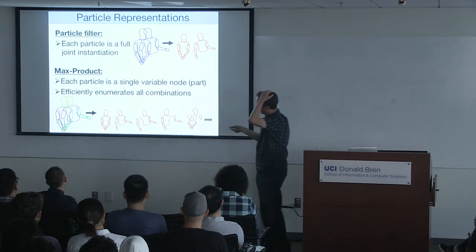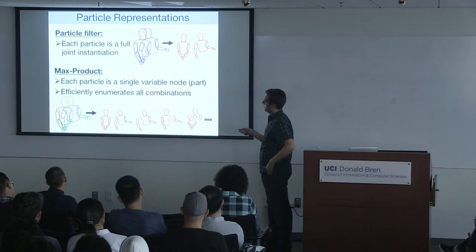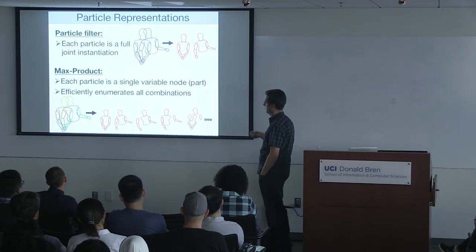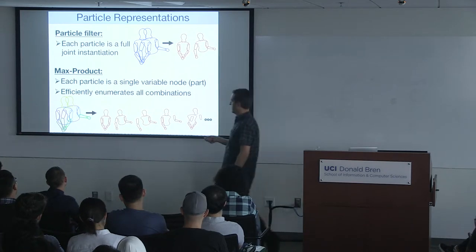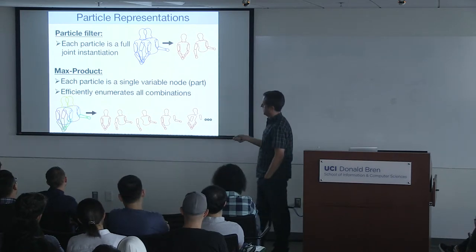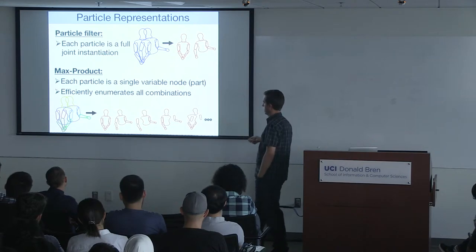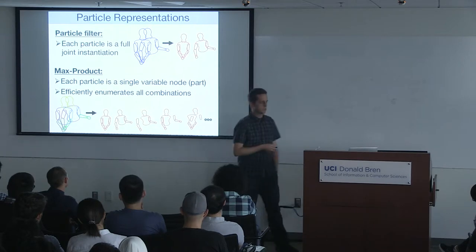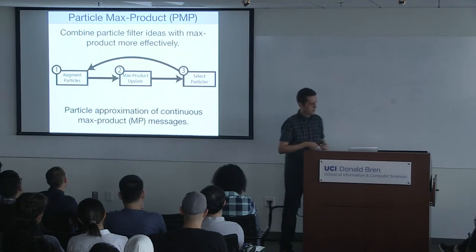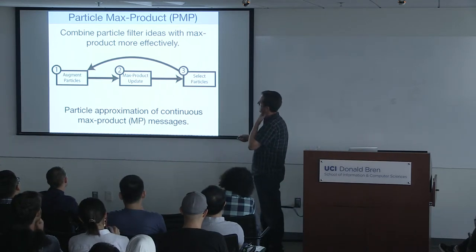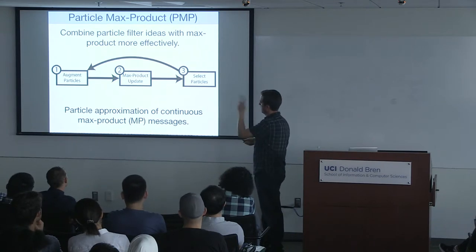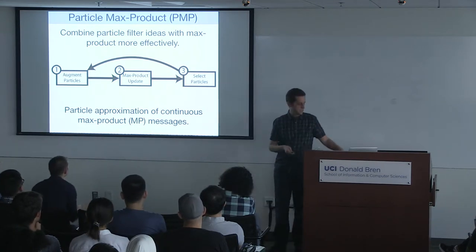In our particle-based inference algorithms, we do something different. Each particle is a single-variable mode: particles for head locations, body locations, upper arm locations, and so on. We then consider all combinations of these particles — all ways of piecing them into whole bodies — and do this efficiently and implicitly using optimization algorithms. The algorithm has a guessing stage where new hypotheses are proposed, then max product message passing to evaluate them, and finally a selection step.